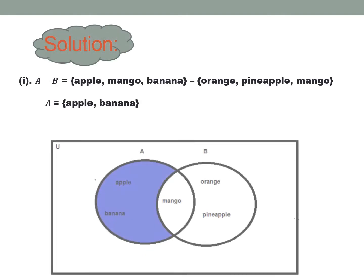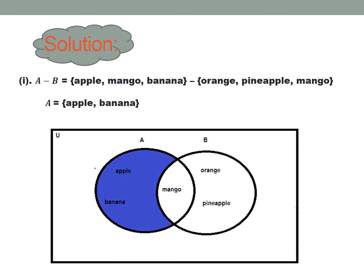Solution. A minus B: all elements of A that are not found in B. So all the elements of A are apple, mango, and banana, minus the elements of B, which are orange, pineapple, and mango. So mango is the common element, and the remaining elements of A are apple and banana.